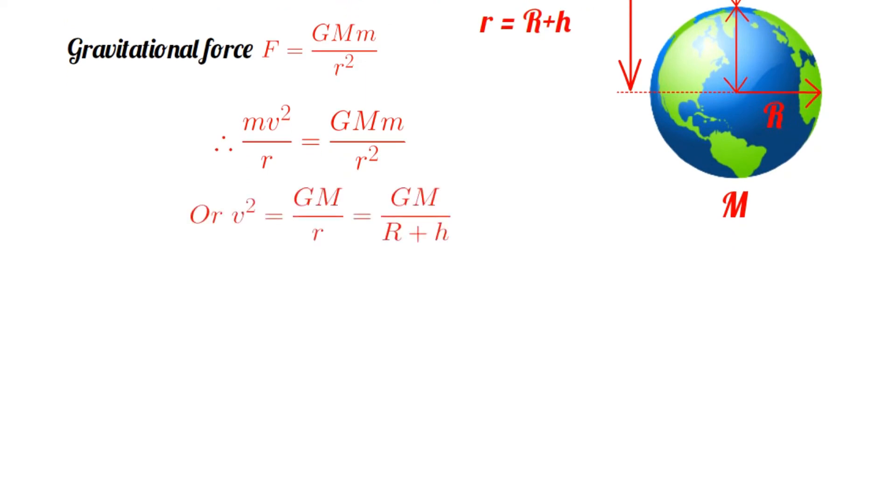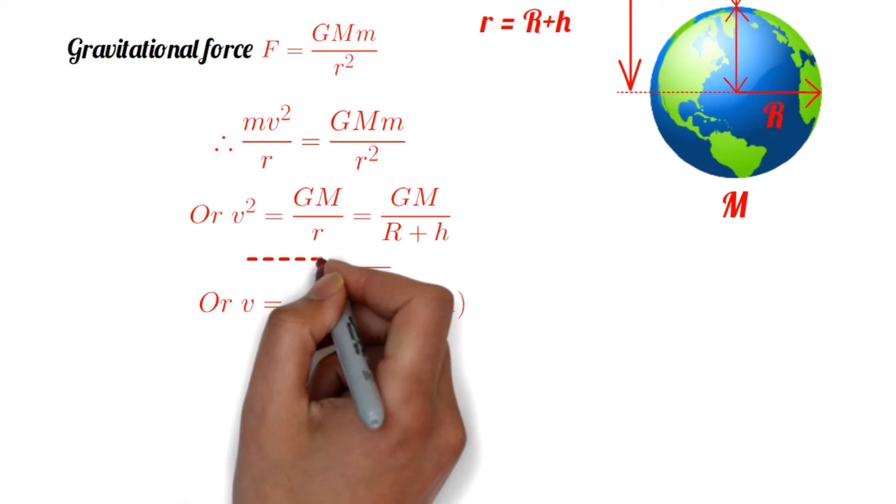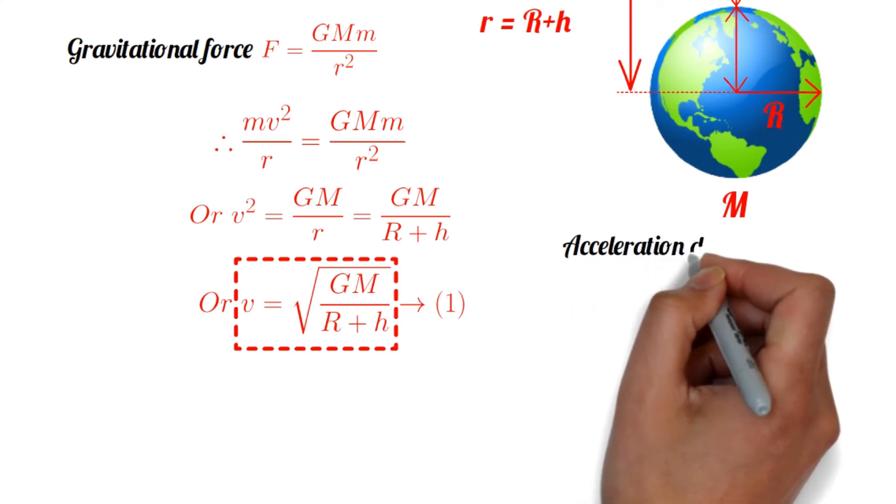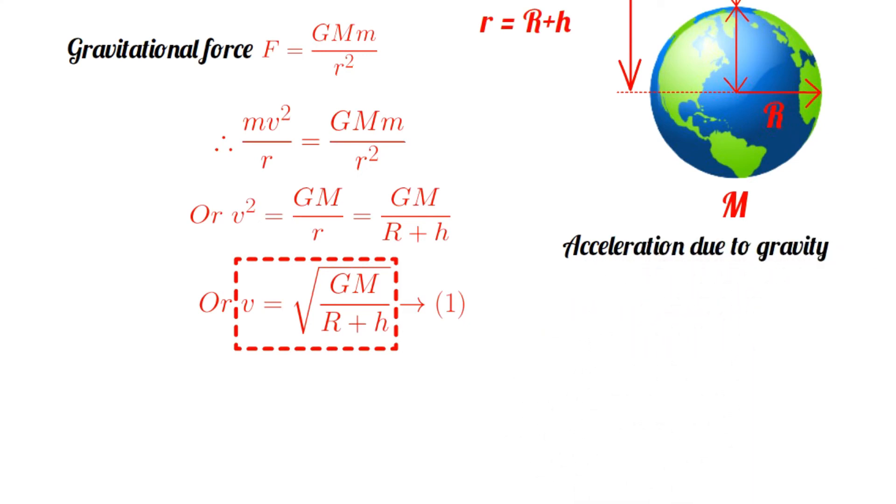By solving this equation we get small v equals root over GM by capital R plus small h. This is the formula for the orbital velocity of an artificial satellite orbiting the Earth. We also know the acceleration due to gravity at the surface of Earth, small g equals GM by R squared. So capital GM equals small g into capital R squared.